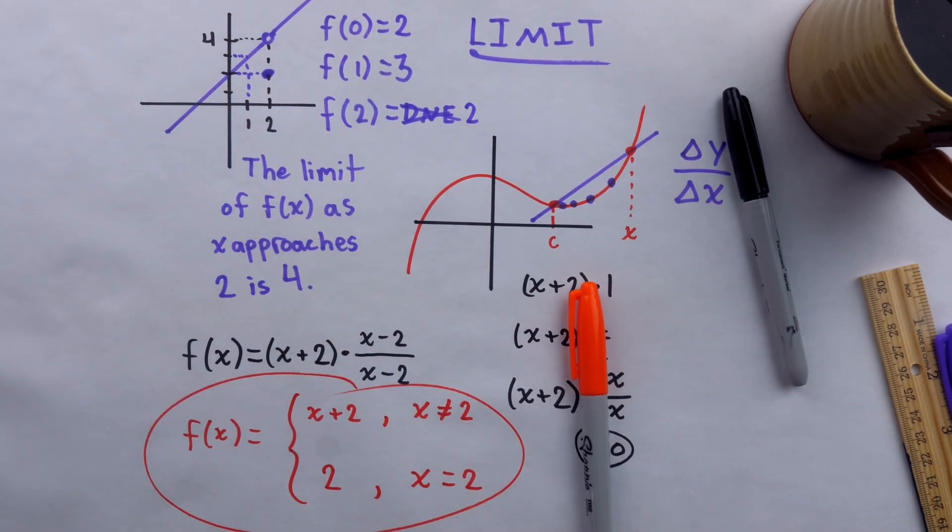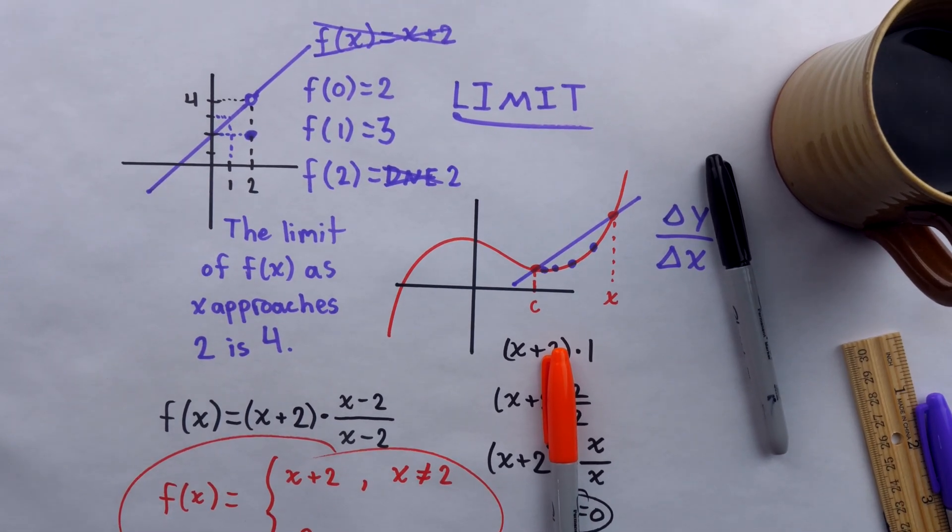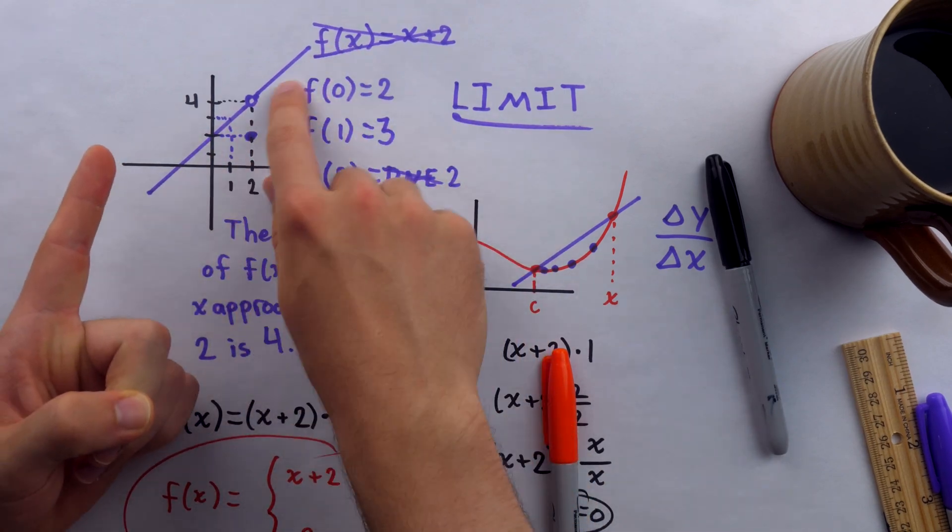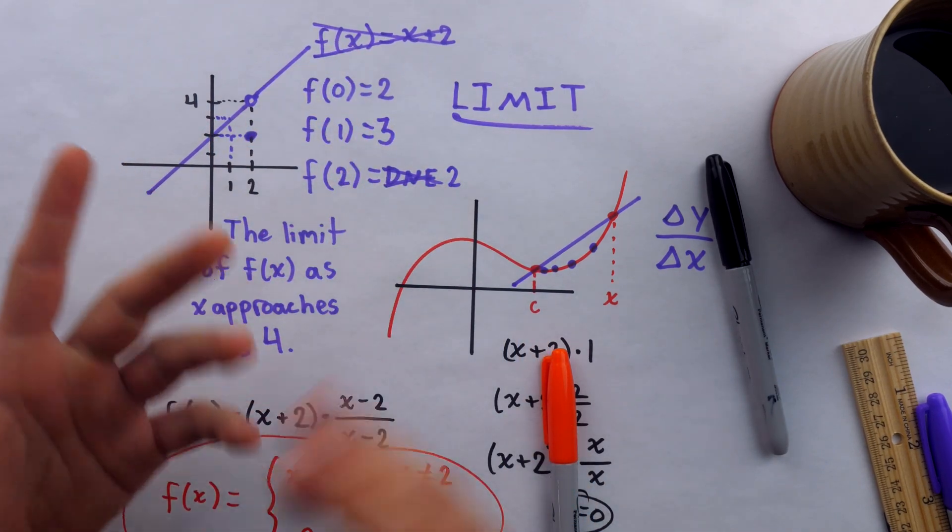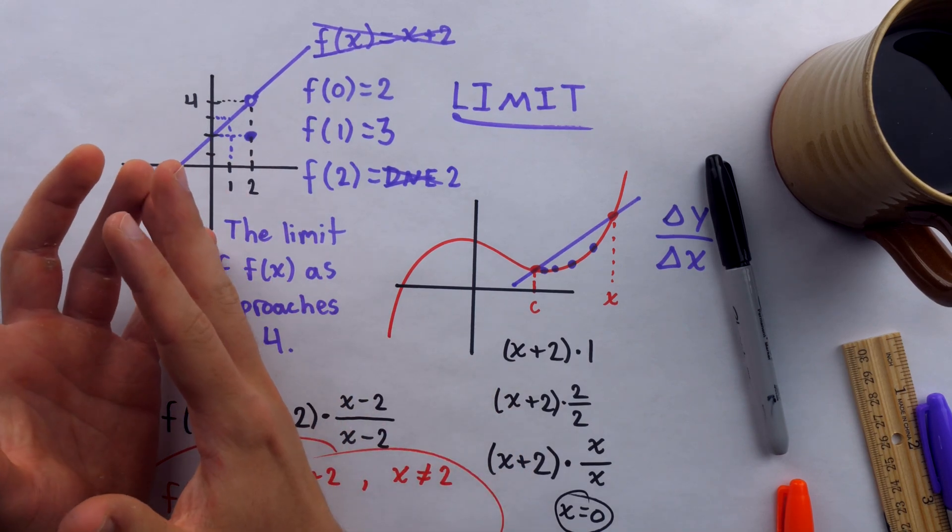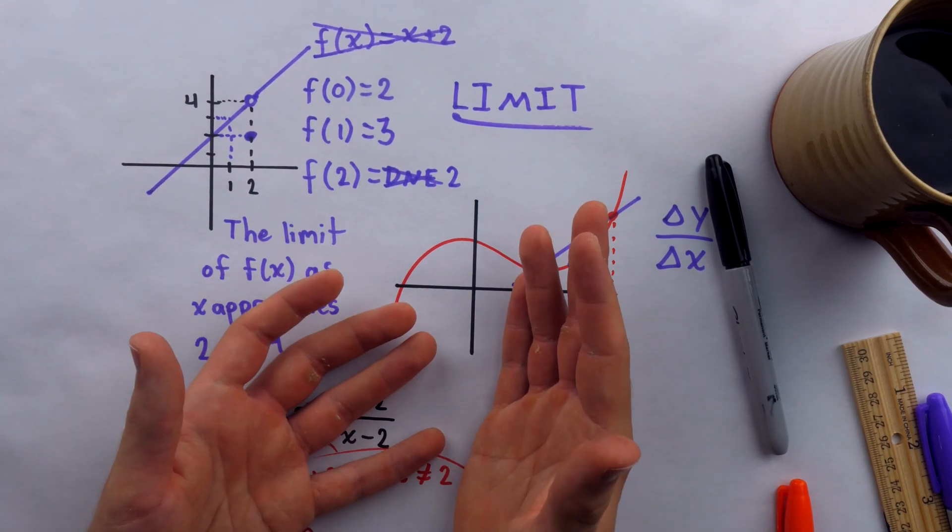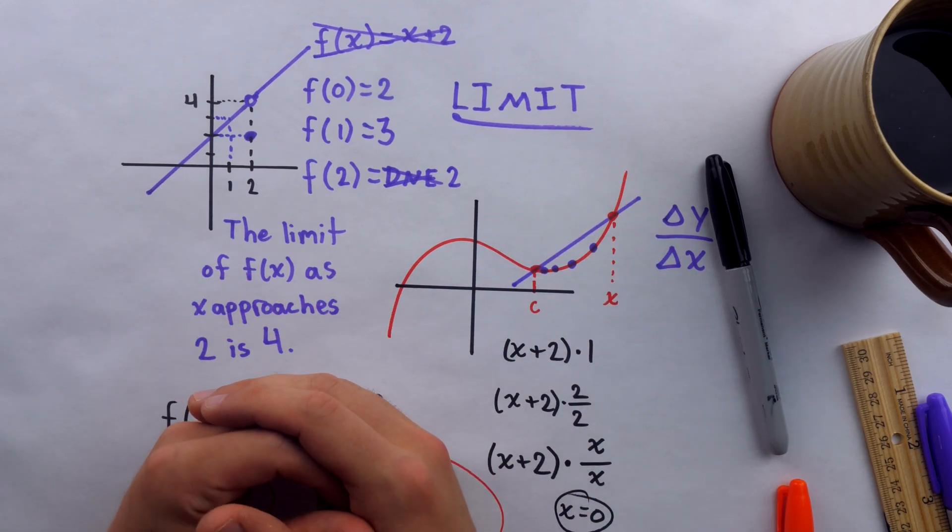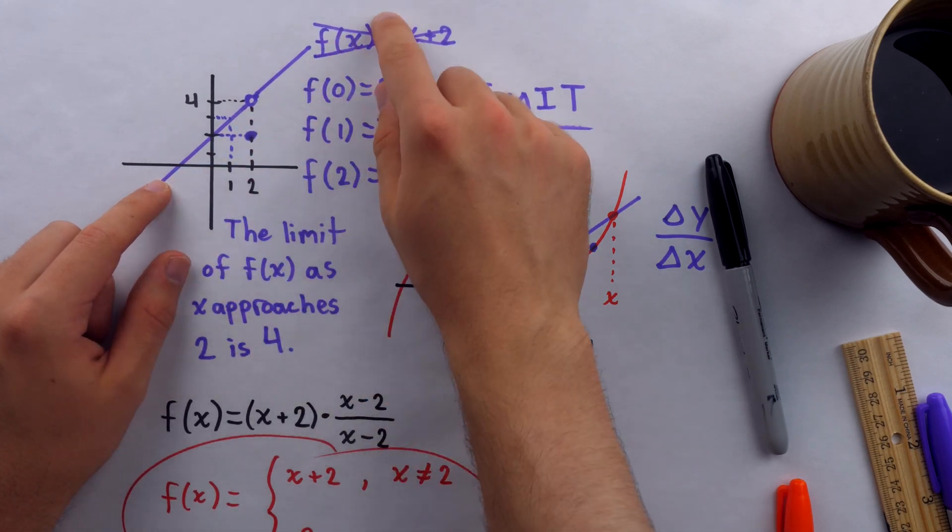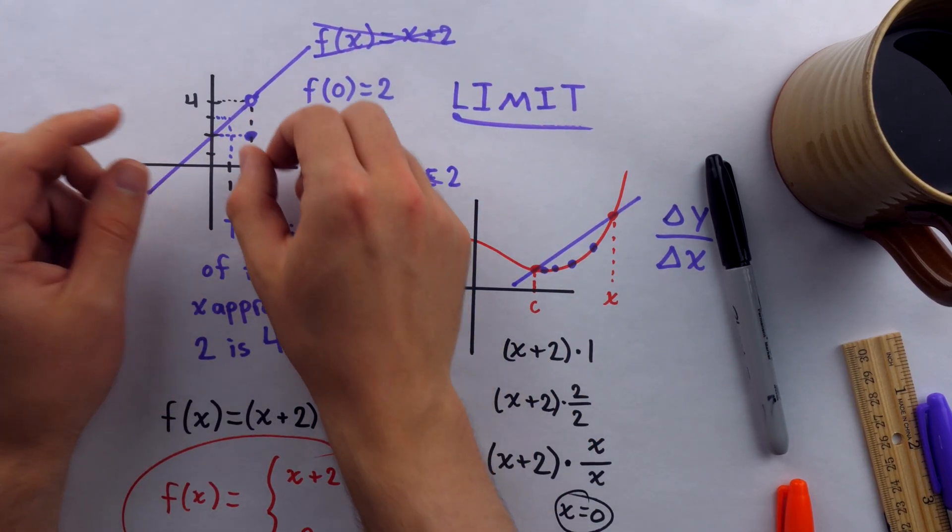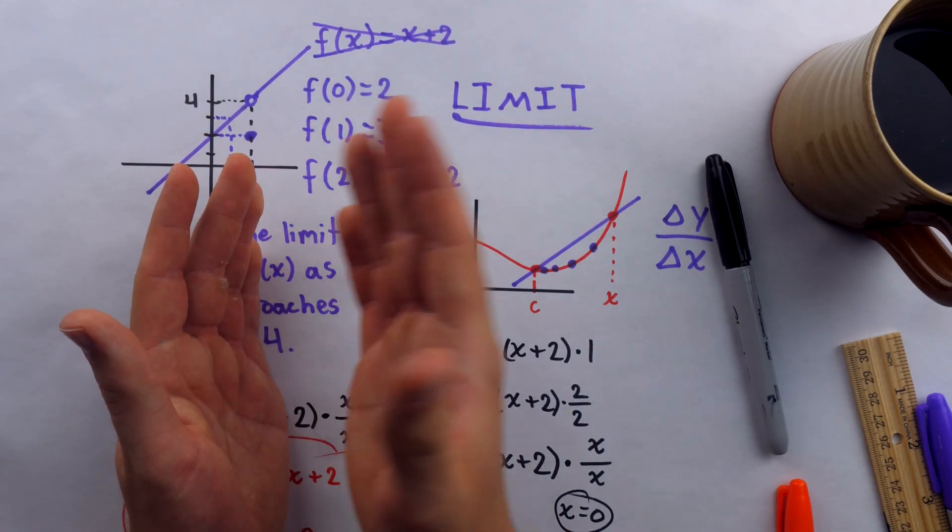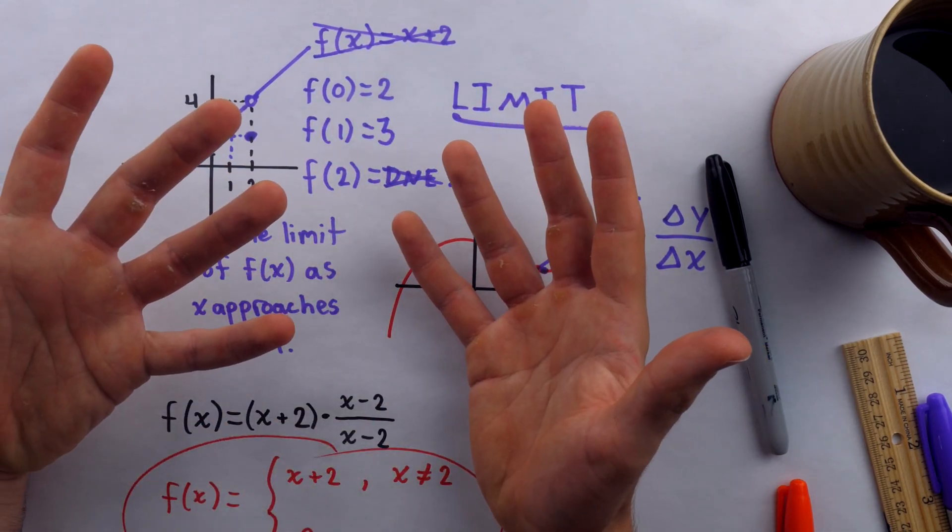Anyways, I've given you quite a bit more here than I really, really want you to take away. What I really, really want you to take away is that one, this silly example of a line with a hole in it is not supposed to be, you know, confusing and bizarre to frustrate you. It's supposed to be the simplest example of something that is bizarre and confusing. It's meant to help you understand that. And the that is that a function can have behavior at a point which is different from its behavior near the point. The value of a function at a point can be different from its limit at that point.